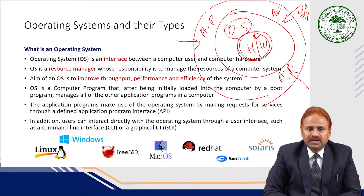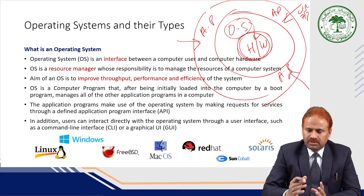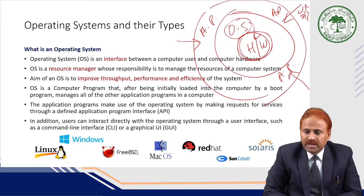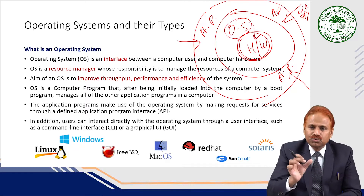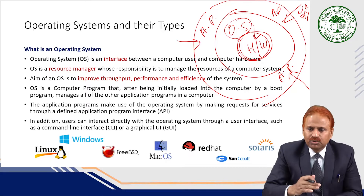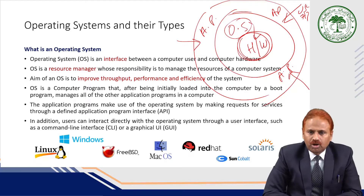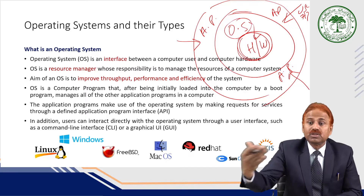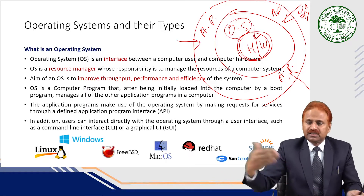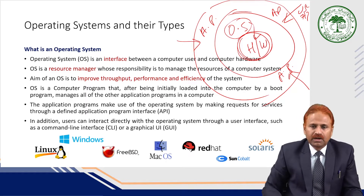In addition, the user can interact directly with the operating system through a user interface such as command line interface (CLI) or graphical user interface (GUI). We do have the shell, which is the command line interface. Using the shell, you can directly pass instructions to the operating system or to the kernel, which in turn gets your job done with the help of hardware.